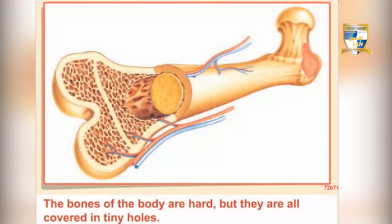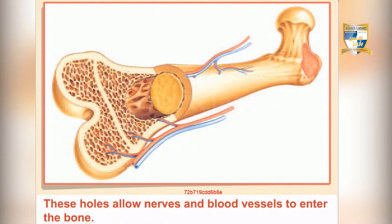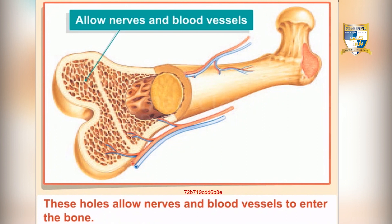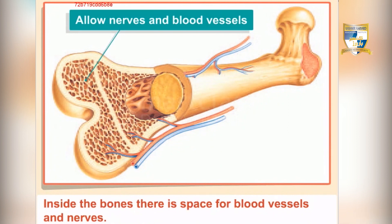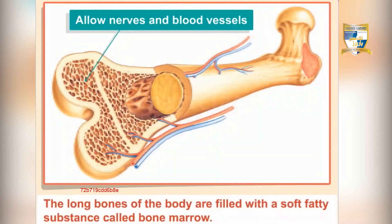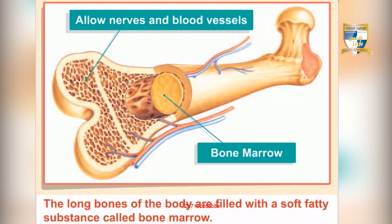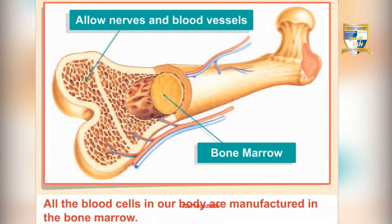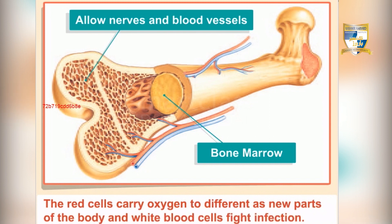The bones of the body are hard but covered in tiny holes that allow nerves and blood vessels to enter. Inside the bones there is space for blood vessels and nerves. The long bones of the body are filled with a soft fatty substance called bone marrow, where all blood cells are manufactured. Red blood cells carry oxygen to different parts of the body, and white blood cells fight infection.